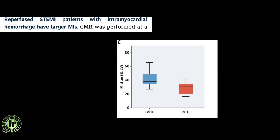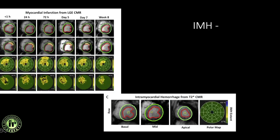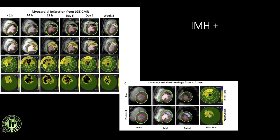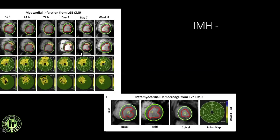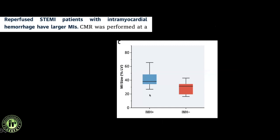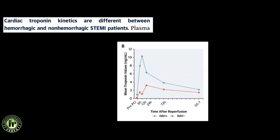The main results showed that reperfused STEMI patients with intramyocardial hemorrhage had larger myocardial infarctions — the infarct size was significantly higher in this group, visible even after eight weeks as a larger bright scar. Comparatively, patients without intramyocardial hemorrhage had a reduced MI size. The larger the MI size, the worse the prognosis — more arrhythmia risk, more morbidity, and increased management complications.